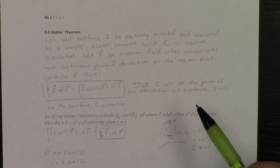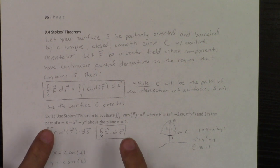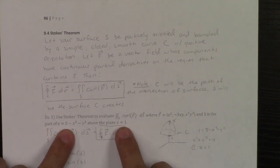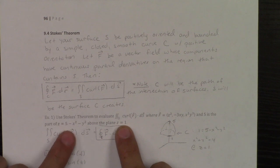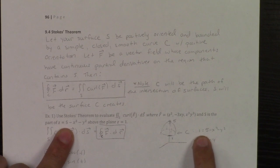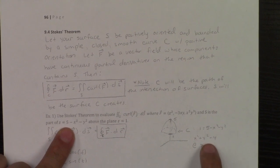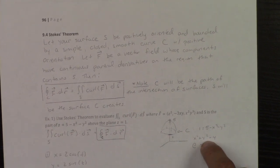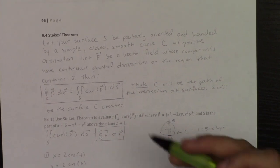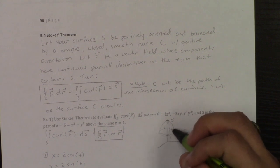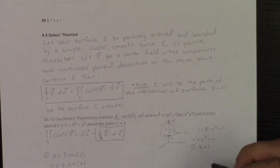Since I have this paraboloid intersected with the plane Z equals 1, then what better way to find the intersection of anything than by setting these two equal to each other. And so, if Z is equal to 1, and Z is equal to 5 minus X squared minus Y squared, setting these two guys equal to each other, 1 is equal to 5 minus X squared minus Y squared, which means I get that X squared plus Y squared is 4. That is a circle with a radius of 2. And this circle with a radius of 2 is at Z equals 1.